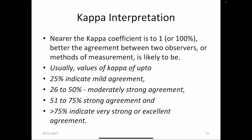How to interpret the Kappa value: as it is close to 1 or 100%, the agreement is complete. The closer to 1, the better the agreement between the two observers, subjects, techniques, instruments, or any methods of measurement. Kappa up to 25% indicates mild agreement; 26 to 50% indicates moderately strong agreement; 51 to 75% indicates strong agreement; more than 75% indicates very strong or excellent agreement. This is how we interpret the Kappa statistic value for reliability.